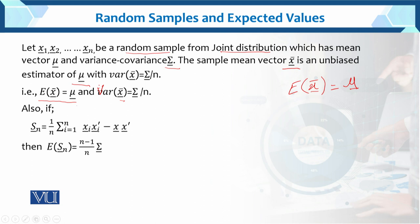Also, if Sn is the sample variance, which equals 1 over n times the sum from i=1 to n of xi xi-transpose minus x-bar x-bar-transpose, then the expected value of sample variance equals (n minus 1) over n times sigma. In this theorem we need to prove: E[x̄] = mu, variance of x̄ = sigma over n.